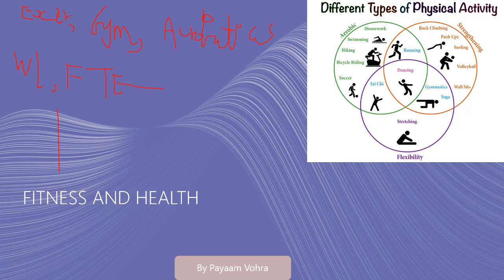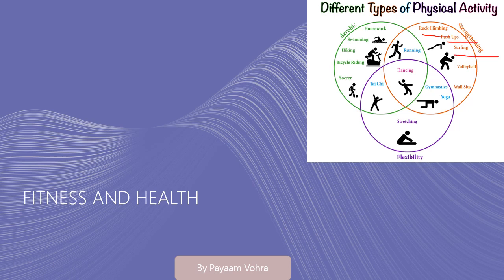There are certain sports, weight lifting, and certain functional training exercises called FTE. Today in the video we'll be discussing these. The diagram represents different types of physical activities responsible for your core strength, aerobics, metabolism, flexibility, endurance, agility, motility — like rock climbing, push-ups, surfing, volleyball, gymnastics, stretching, and flexibility.